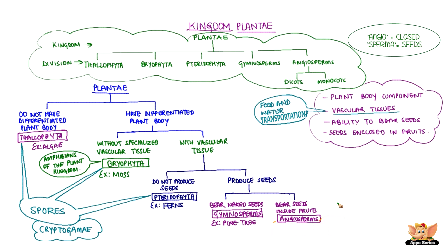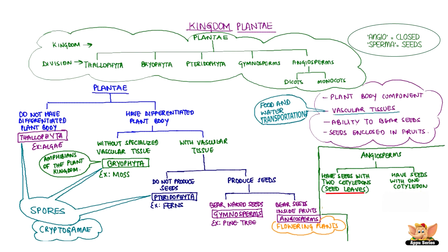Angio means closed and sperma means seed in Greek. These are also called flowering plants and bear seeds inside fruits. The seeds have seed leaves within them called cotyledons. Plants with seeds having a single cotyledon are called monocots and those with two are called dicots. Green peas are dicots and corn are monocots.